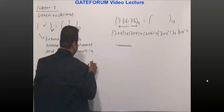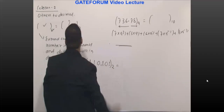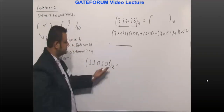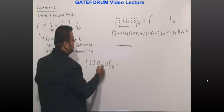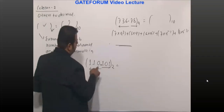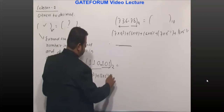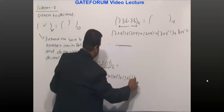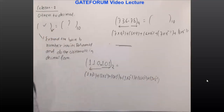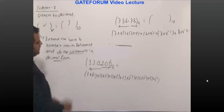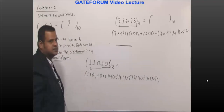Very frequently you might have known these things. Let us take a small number: 1 1 0 . 1 0 1, and this is base 2. We are interested in base 2 to base 10. Take the binary radix point as the reference: this side decreasing power of 2, so 2⁰, 2¹, 2². This gives: 1 × 2² + 1 × 2¹ + 0 × 2⁰ + 1 × 2⁻¹ + 0 × 2⁻² + 1 × 2⁻³. Finally you add this — that is why we say do the arithmetic in decimal form — simply add this and get the answer.